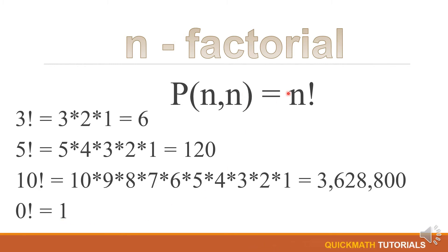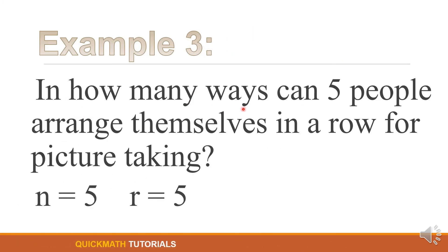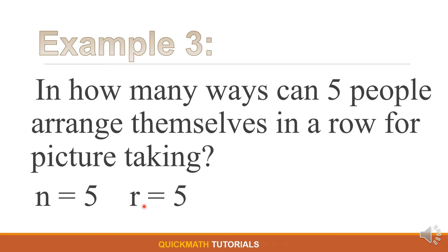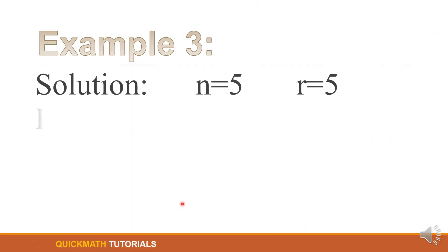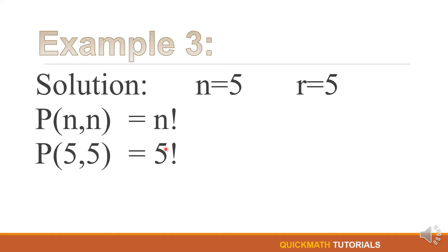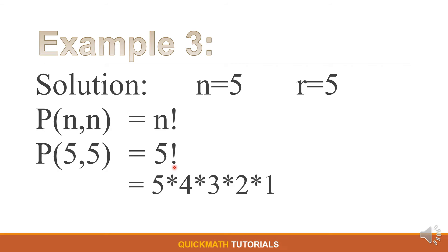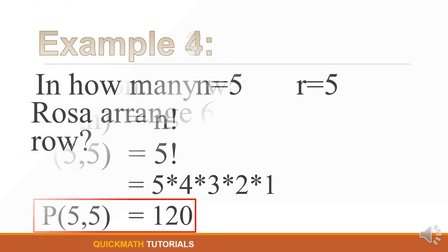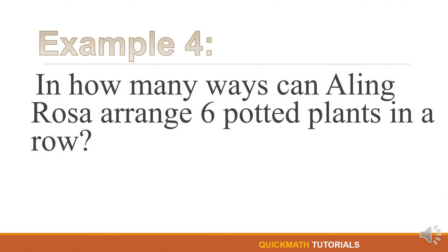This formula is used if all of the given objects will be arranged. For example, in how many ways can five people arrange themselves in a row for a picture taking? Our n is equal to 5, and since we will arrange all of them, r is also equal to 5. Using the formula of n factorial, by substitution we have 5 factorial, which is 5 times 4 times 3 times 2 times 1, equal to 120.